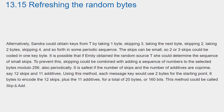Alternatively, Sandra could obtain keys from T by taking one byte, skipping three, taking the next byte, skipping two, taking two bytes, skipping four, and so forth in some periodic sequence. The skips can be small, so two or three skips could be coded in one key byte. It is possible that if Emily obtained the random source T, she could determine the sequence of small skips. To prevent this, skipping could be combined with adding a sequence of numbers to the selected bytes modulo 256, also periodically.